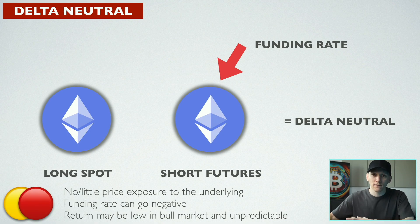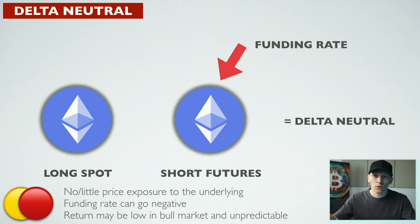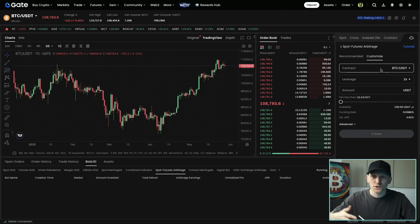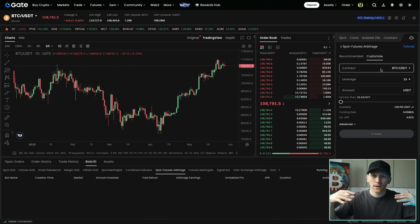What exactly is this bot doing under the surface to earn yields for us? Well, it's carrying out a delta-neutral trading strategy. This is a very common strategy used across different crypto platforms. There are projects specifically that carry out this trade. Essentially, what it's trying to do is take advantage of crypto futures funding. It's known as a Spot Futures Arbitrage bot, and it's trying to create a position where we don't have any or very little exposure to price movements in the assets that we're trading.